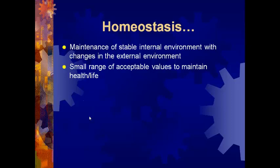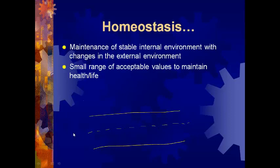Let me give you an example using body temperature. There's going to be a small range of acceptable values that your body has to stay in order to maintain health and life. In the middle of the high and low values is what we call a set point. Your body is always trying to keep values in this range. Your set point for body temperature is around 98.6. If you go outside and it's really hot, your body temperature will start to go up, but it has to stay below this range in order to be healthy.